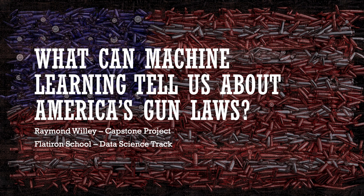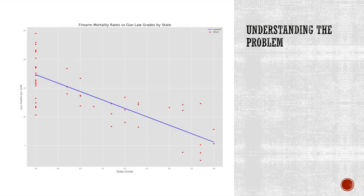The most common metric used to justify the effectiveness of gun laws is the firearm mortality rate. Using the Giffords Law Center's rating of state gun laws in conjunction with data from the CDC, we see that as scores increase, firearm mortality rates decrease. The problem here is that it tells us nothing about other modes of mortality. If firearm homicides go down but other types of homicide go up, has anything really been accomplished? Not really.